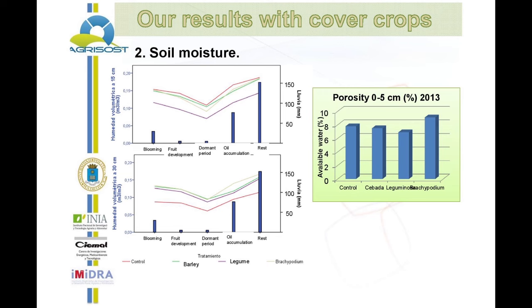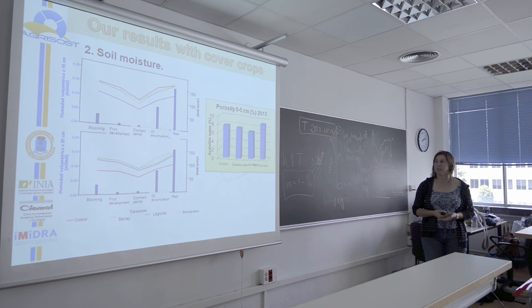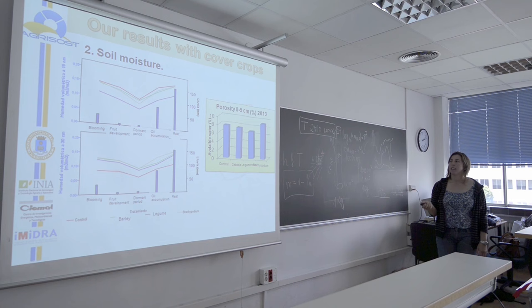At 15 centimeters, the soil moisture is less with the legume treatment, and this occurs throughout the year. But at 30 centimeters, we found that the control had a lower quantity of water, and this happened consistently.